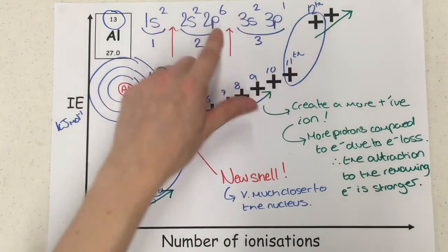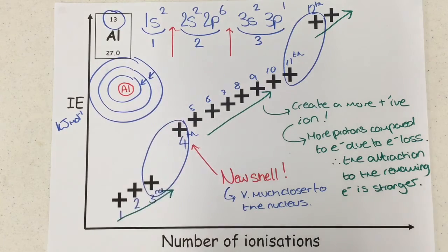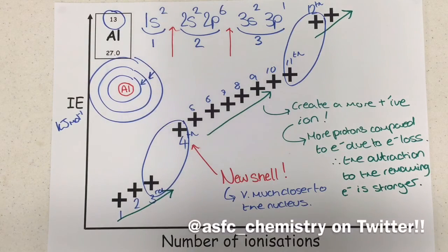So the gradual climb is because we're creating a more positive ion each time, and we've got more protons compared to electrons due to electron loss. And the reason for the big jumps is because every time we have a big jump, this fourth one for instance, we are trying to remove that electron from a new shell, which is very much closer to the nucleus and therefore more strongly attracted and harder to remove. I hope that sums up some of the first ionization and then successive ionization questions you might have. I'll leave you to it. Happy revising.